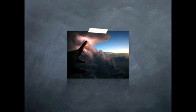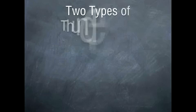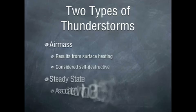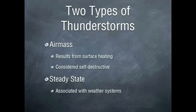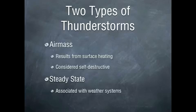Thunderstorms are one of those things that every pilot fears. They can come in a matter of minutes and hang around for hours on end. They not only affect us in the air, but also on the ground. To better understand thunderstorms, we need to first know the two types. The first is an air mass. Think of Florida afternoon showers — they always result from surface heating, the land getting baked all day by the hot Florida sun. They're usually self-destructive, meaning they rain themselves out. That's why it could be raining one minute and not the next in Florida — a result of an air mass thunderstorm.